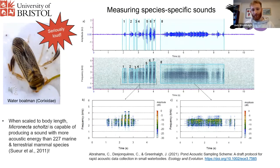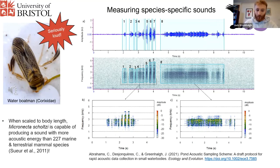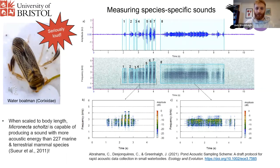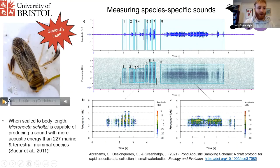Water boatmen are quite amazing with their sound production because they're incredibly loud. A particular species, Micronecta, is capable of producing an incredibly loud sound — louder than 227 marine and terrestrial mammal species when scaled to its body length. People have even reported being able to hear these sounds made by the water boatman as they're walking next to the pond. So really amazingly loud sounds, and it sounds a bit like this.